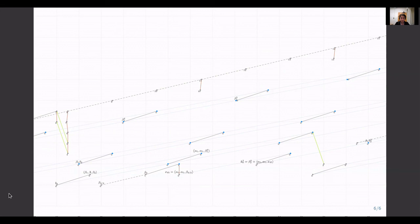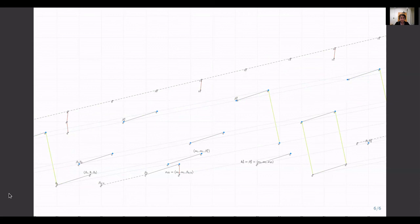Next, we have the E3 page with the d3 differentials. This is much simpler than before. There are only a few differentials left.